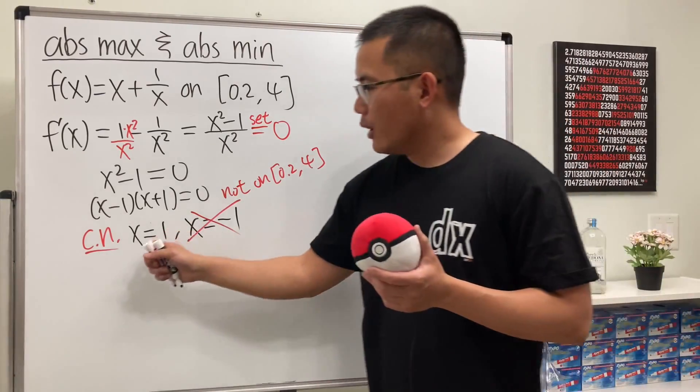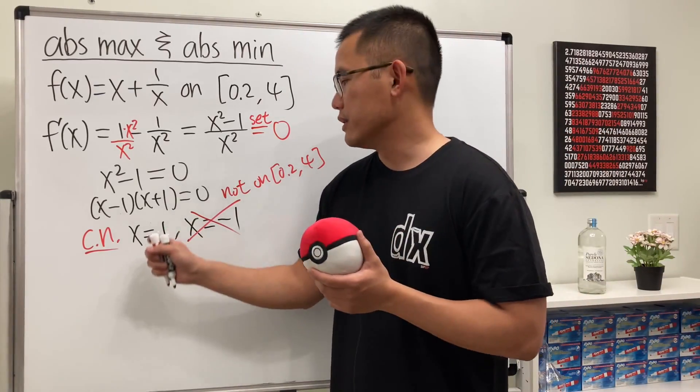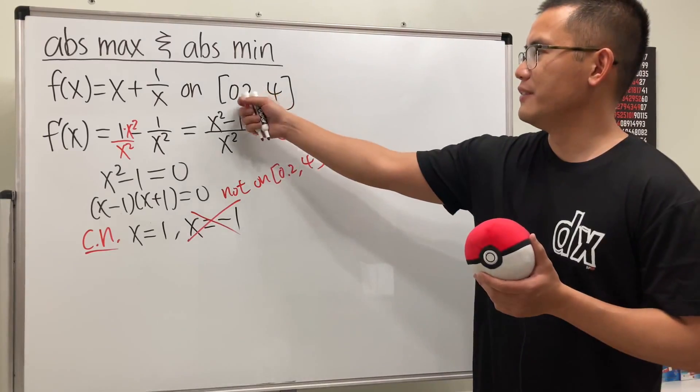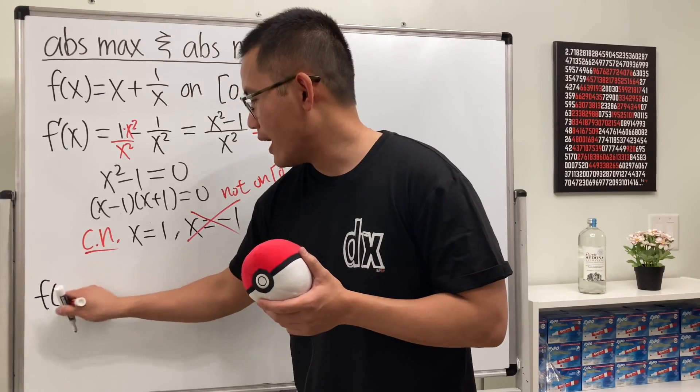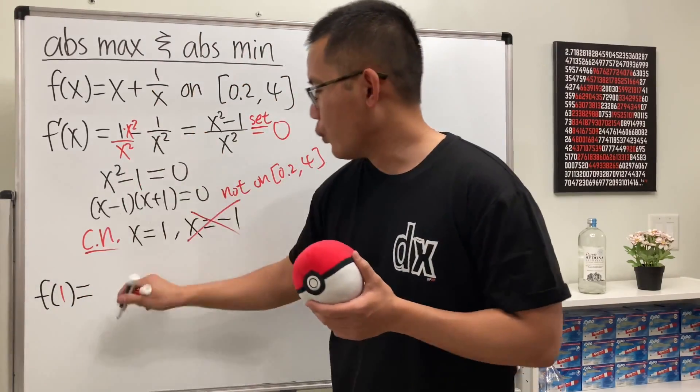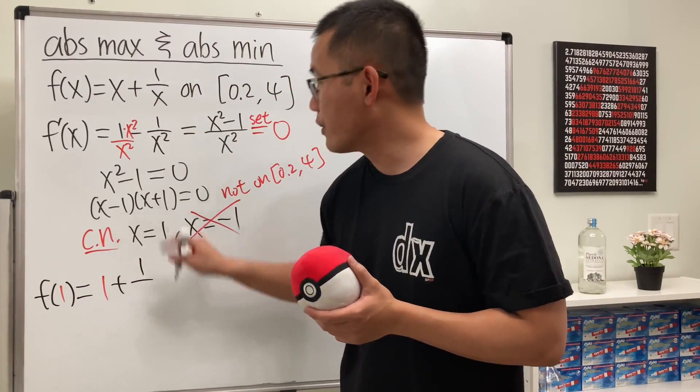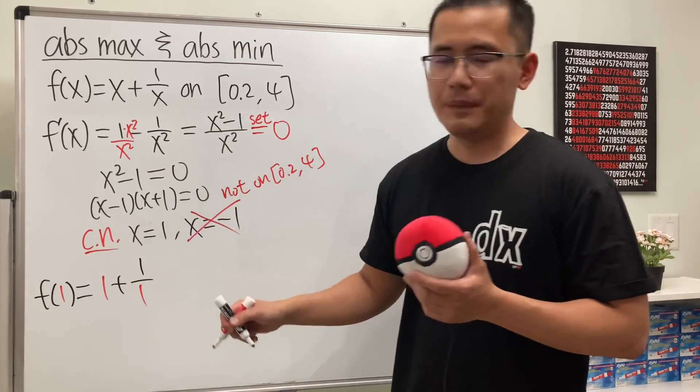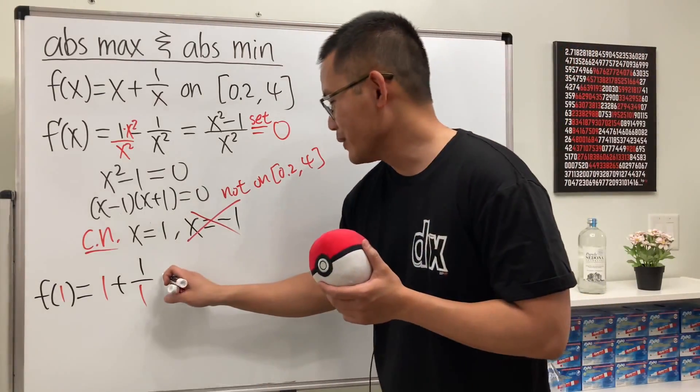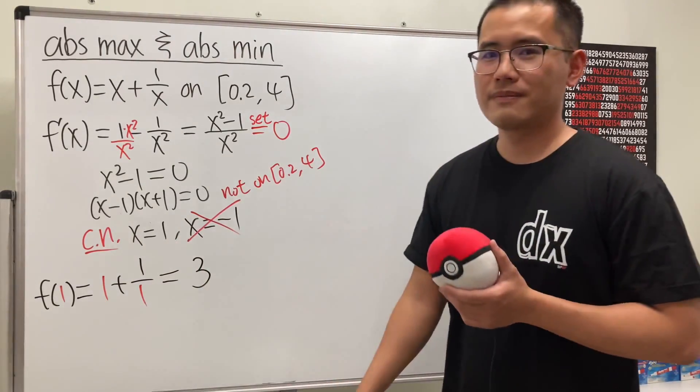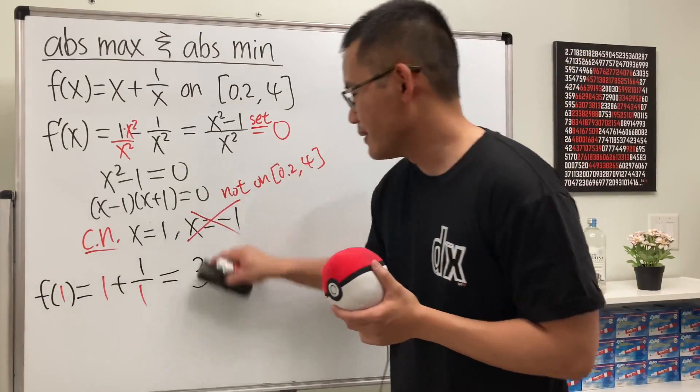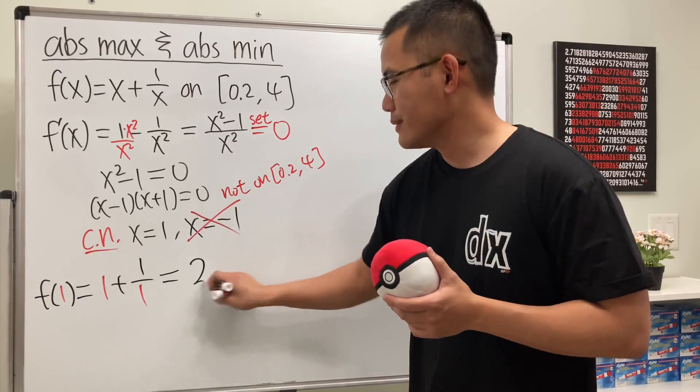But anyway, the only critical number we have to worry about is 1. And then we also check the value of the function at the endpoints. Let's get to work. f(1) is 1 plus 1 over 1. We don't need a calculator for this. This is just 1 plus 1, which is 2.